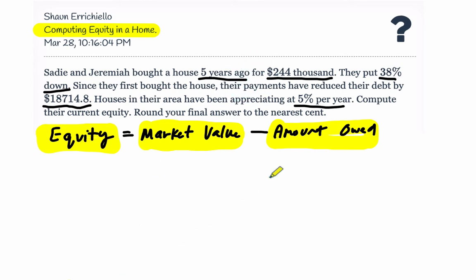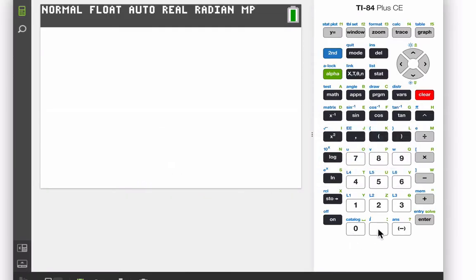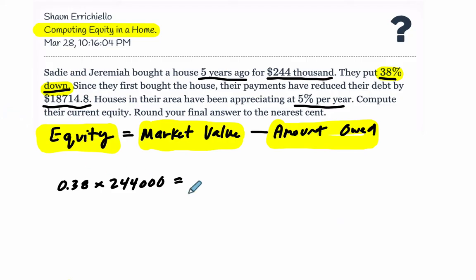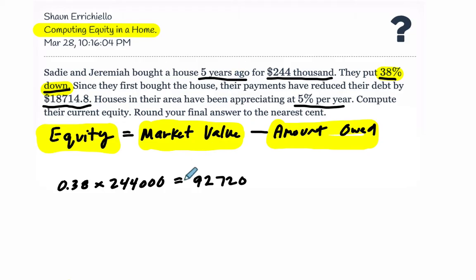Let's look at the down payment — when it says they put 38% down, that means we take 0.38 and multiply it by $244,000. This will equal the down payment on the house. So we have 0.38 times $244,000, and we get $92,720. So they put down quite a bit of money on their house. This is their down payment — that's the cash they put down.